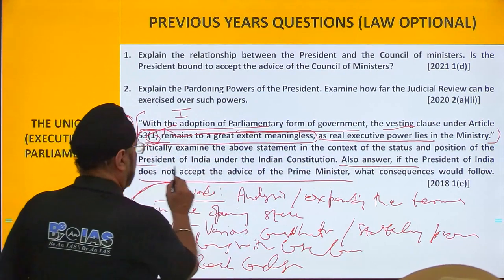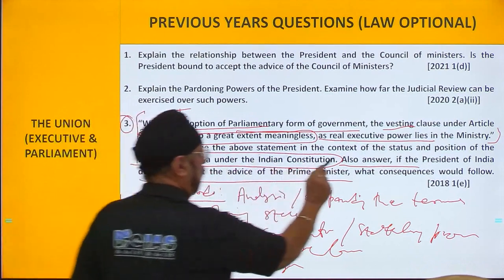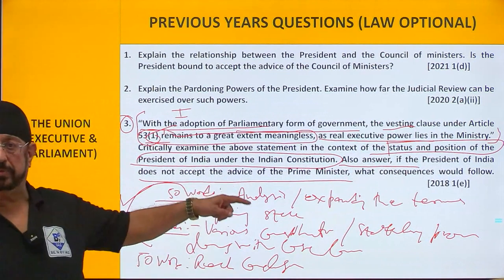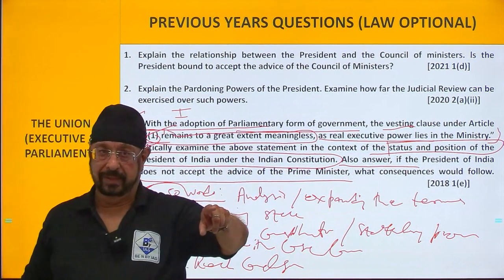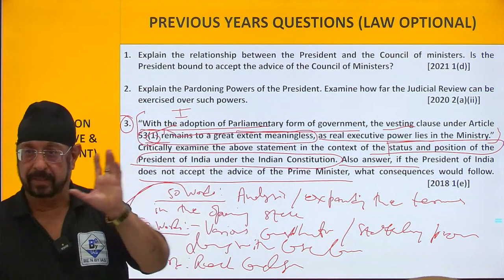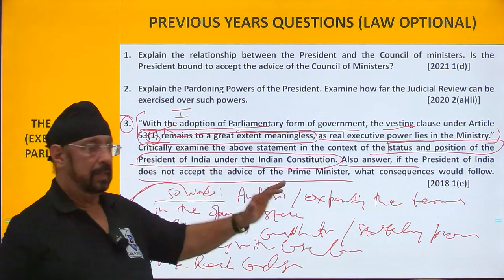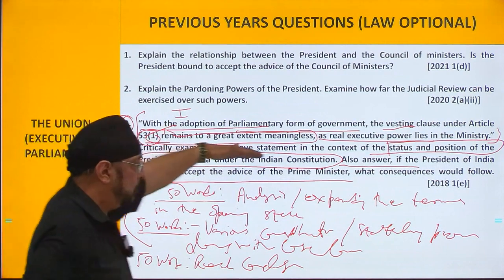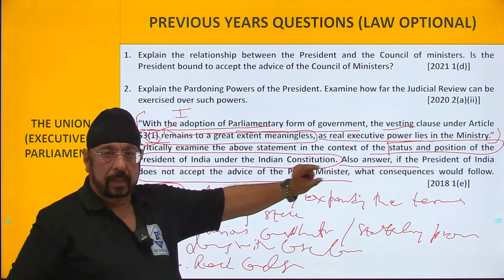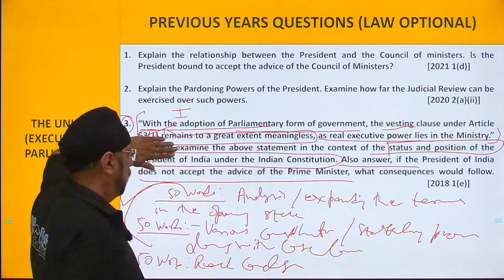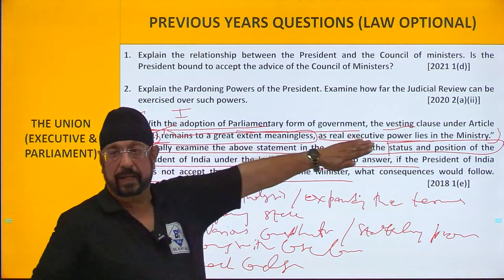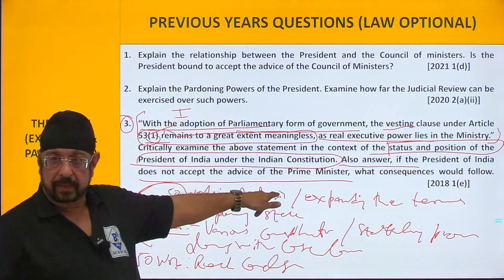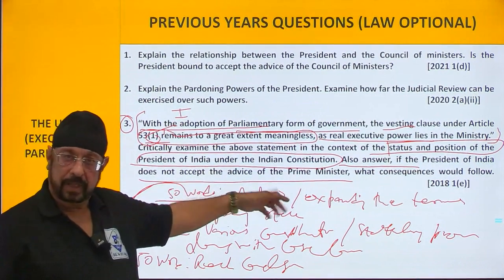Examine the above statement in the context of the status and position of the president under the Indian constitution. You have to explain this in the second part — the status and position of the president. You have to give the constitutional provisions: constitutional head, and the president has to go by the aid and advice of the council of ministers. This will be the status of the president.